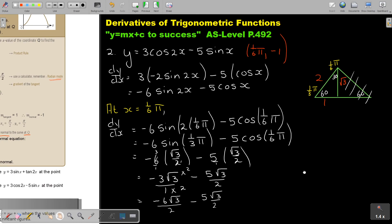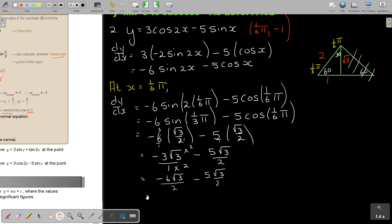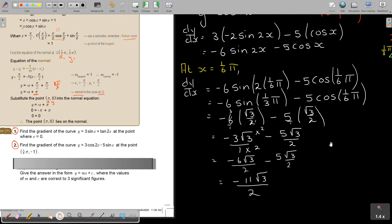The exact answer will be negative 11 square root 3 over 2. Let's go back to the question. Find the gradient of the curve at the point. Therefore, gradient of the curve at 1 over 6 π by negative 1 is negative 11 square root 3 over 2. And that's my answer.